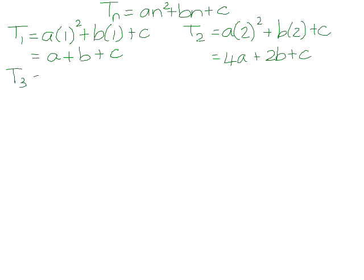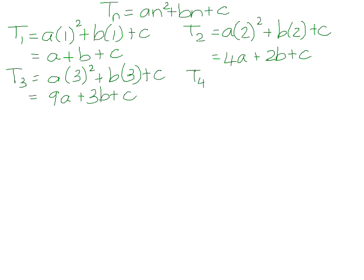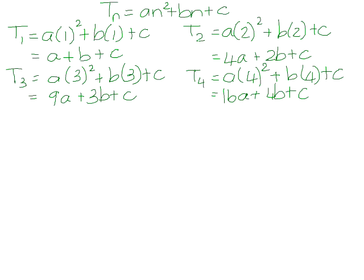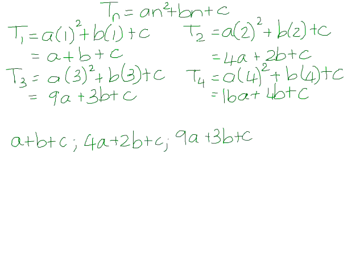If we investigated the third term, we would have a times 3 squared plus b times 3 plus c, which gives us 9a plus 3b plus c. And for the fourth term, we have a times 4 squared plus b times 4 plus c, which is 16a plus 4b plus c. So if we now write that as a sequence: the first term is a plus b plus c, the second term is 4a plus 2b plus c, the third term is 9a plus 3b plus c, and the fourth term is 16a plus 4b plus c.